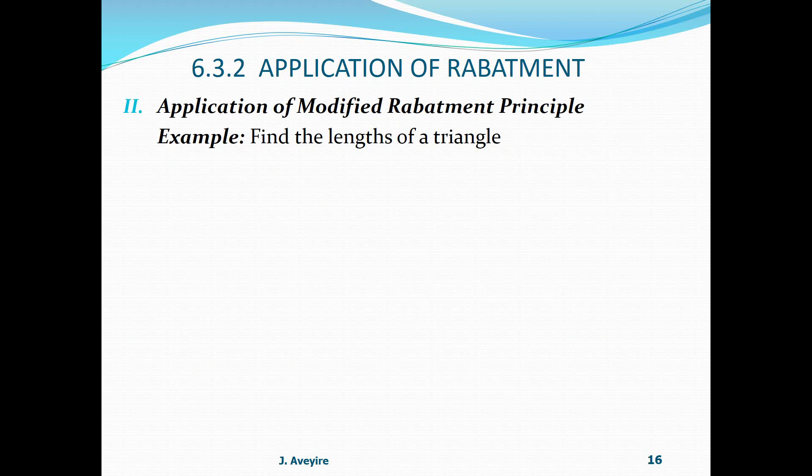Application of modified rabatment principle. Example: find the lengths of a triangle. First, look out for two mutual views of the triangle. Here we have two mutual views, the front view and the top view of triangle ABC. Determine which of the views should be fixed. Here the top view is selected as the fixed view.